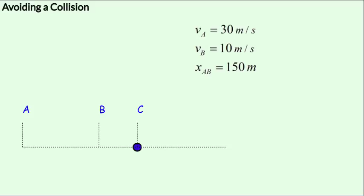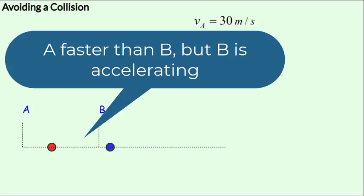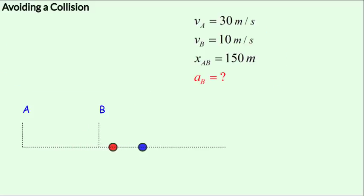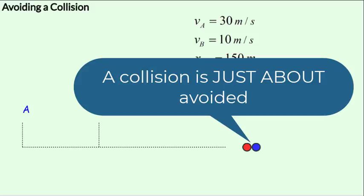Let's see what this would look like in animation. Initially, you can see that A is faster than B, so it is catching up. But B is also gaining a bit of speed due to its acceleration, and a collision is just about avoided.